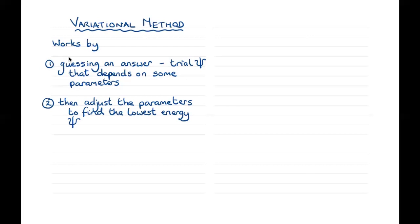This method, the variational method, is based on the variational principle, which tells us that the parameters that give the lowest energy — the lowest expectation value of the energy — give us the wave function that's closest to the true wave function. Which is a rather remarkable statement, but it's quite easy to prove. So we'll start by proving this variational principle.